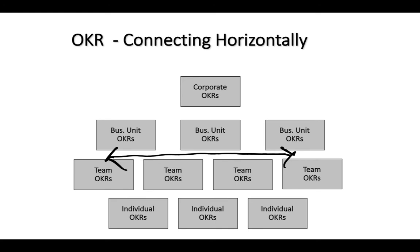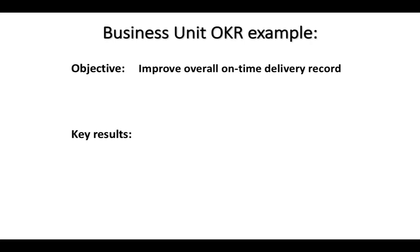It takes some skill and planning, but the example in this video will be on what you see right now — horizontally connecting. Let's walk through an example so I can show you how to connect horizontally. Here's a nice generic example of an objective we could see at the business unit level: improve overall on-time delivery record. I chose a business unit level OKR example to show you how teams can align horizontally.